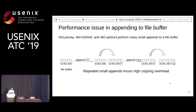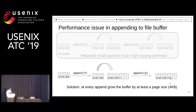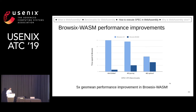We solved this issue by ensuring that whenever an append happens, we grow the buffer by at least a page size. Many other performance issues were also solved, and we improved the performance of Browsix-Wasm by around 5x.